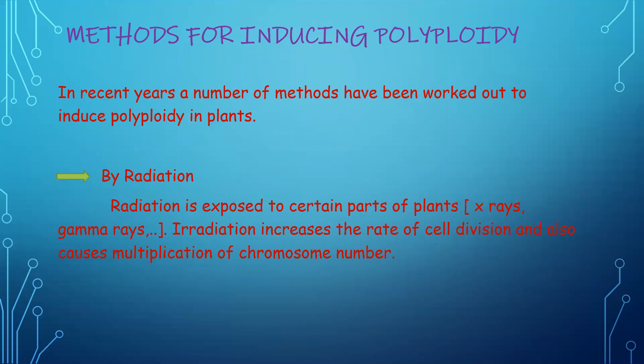There are several methods for inducing polyploidy. One technique is by radiation — X-rays, gamma rays, etc. are exposed to certain plant parts. These radiations increase the rate of cell division and also cause multiplication of chromosome number, thus inducing a polyploid condition in plants.